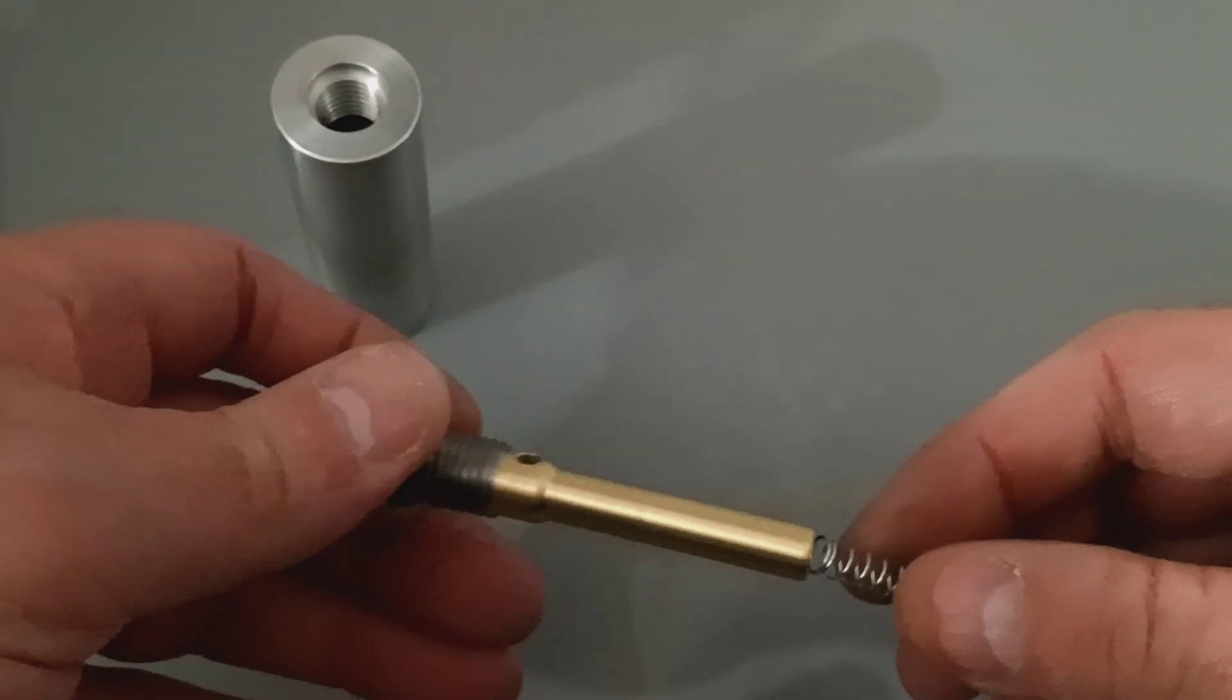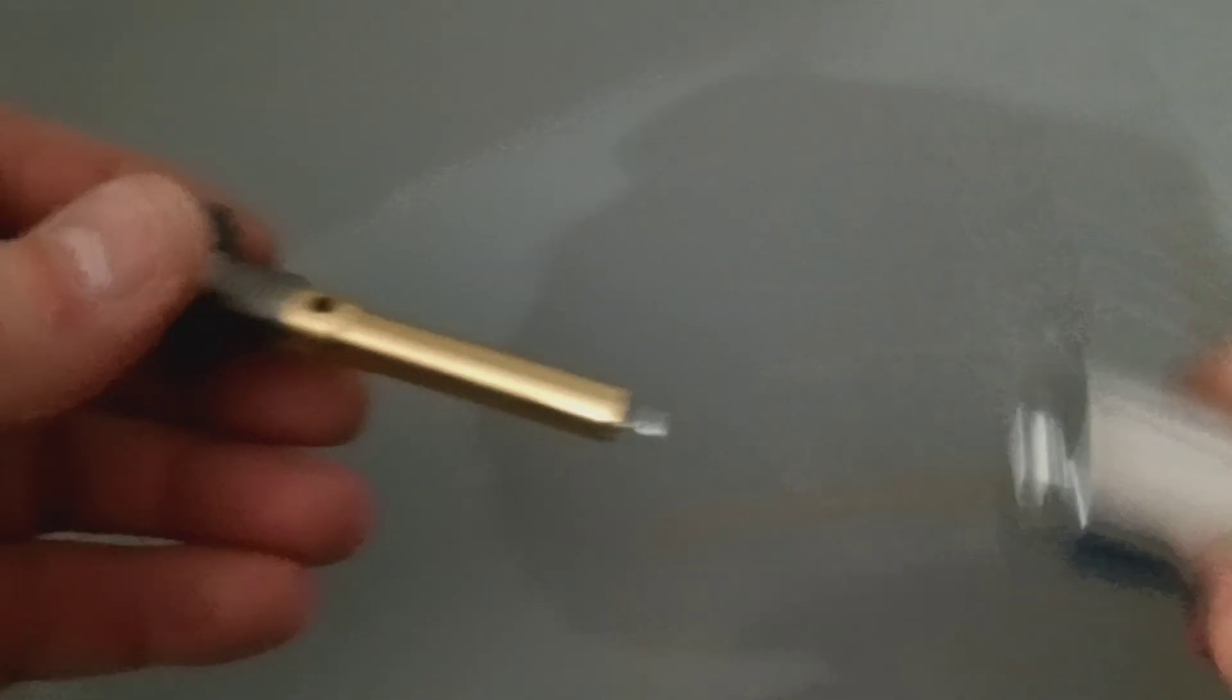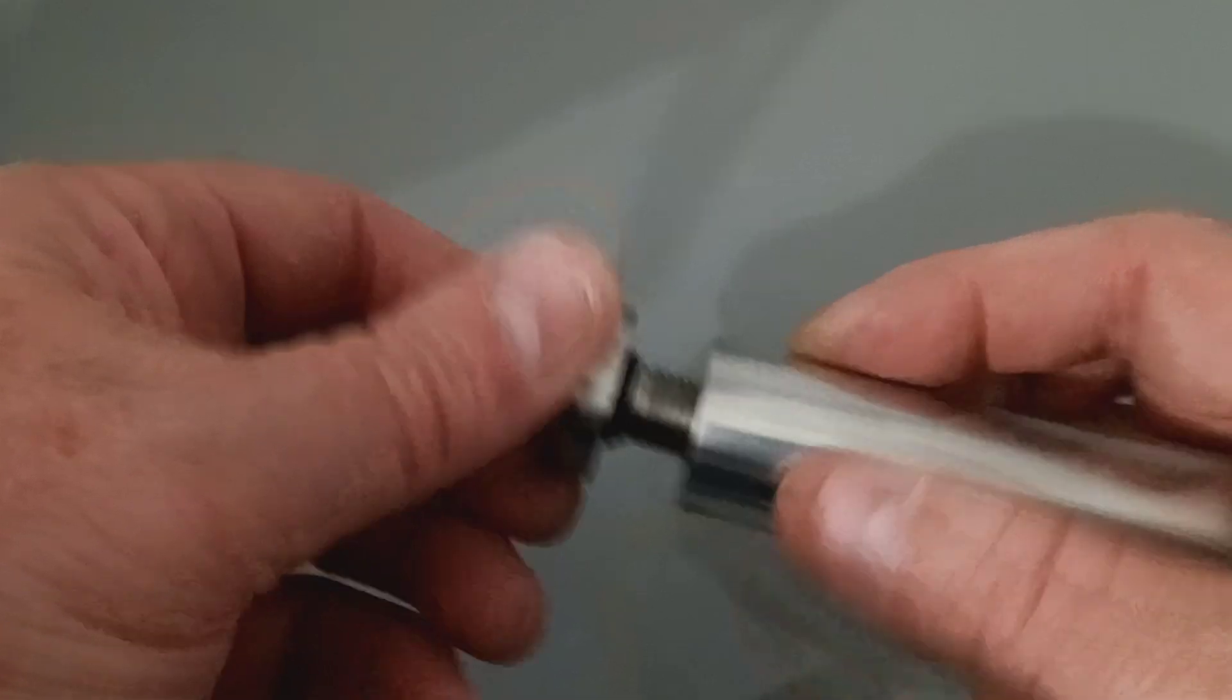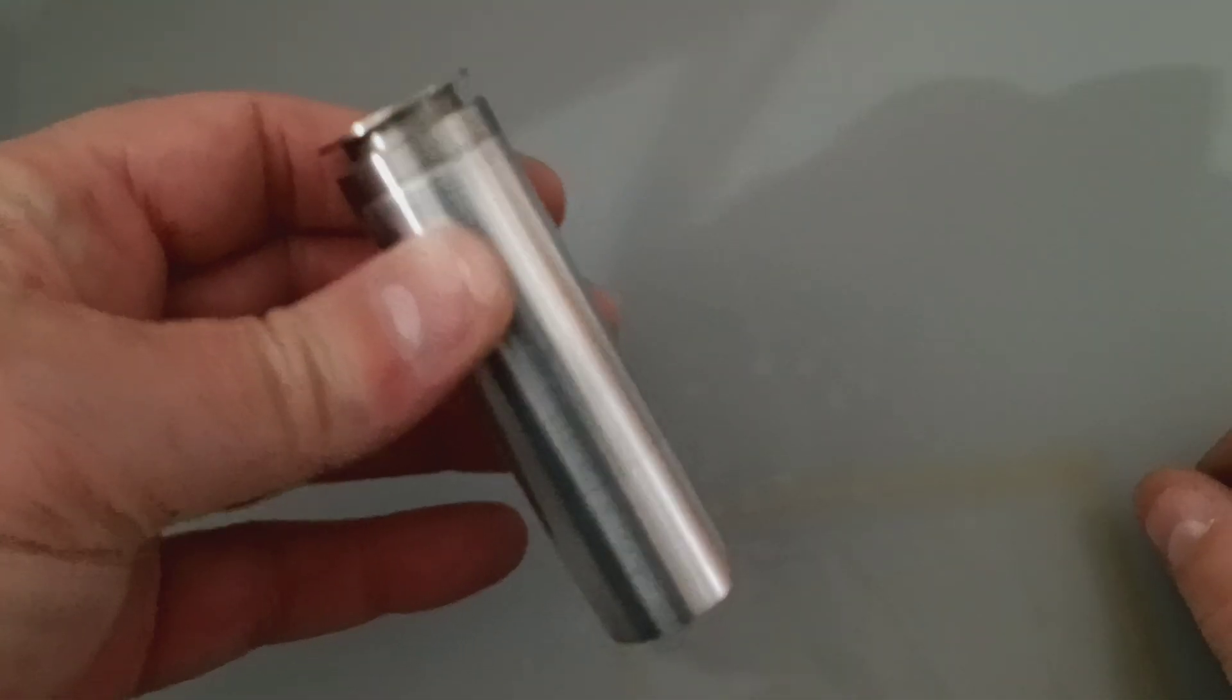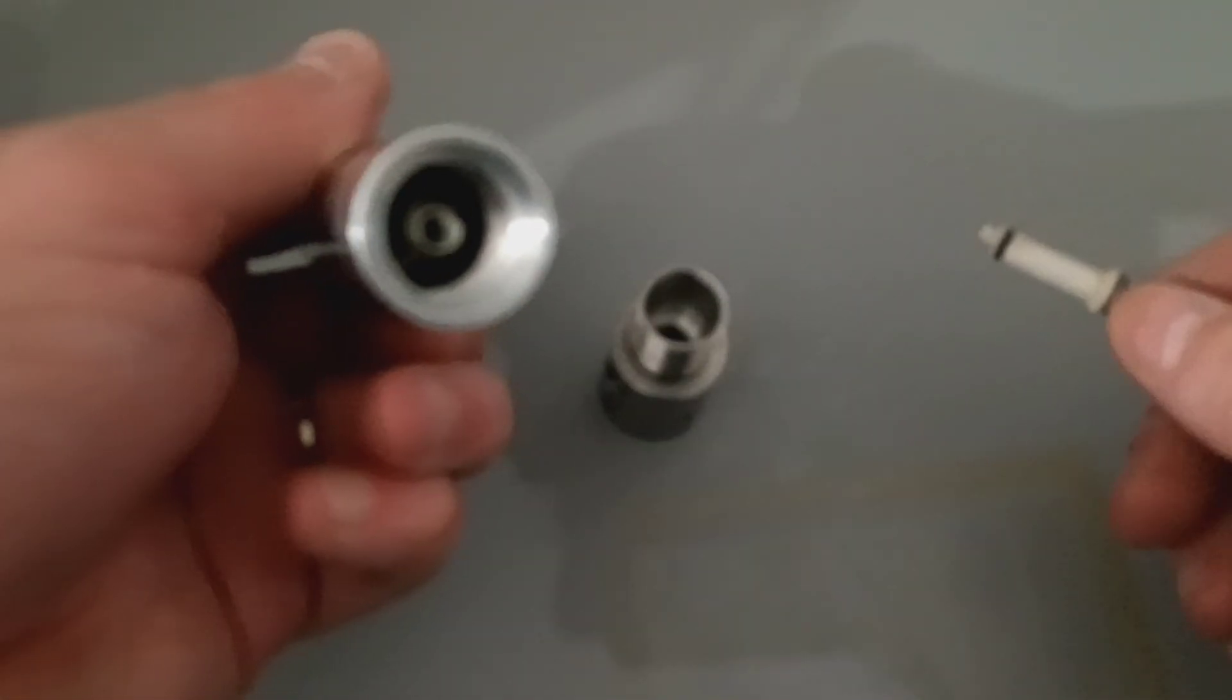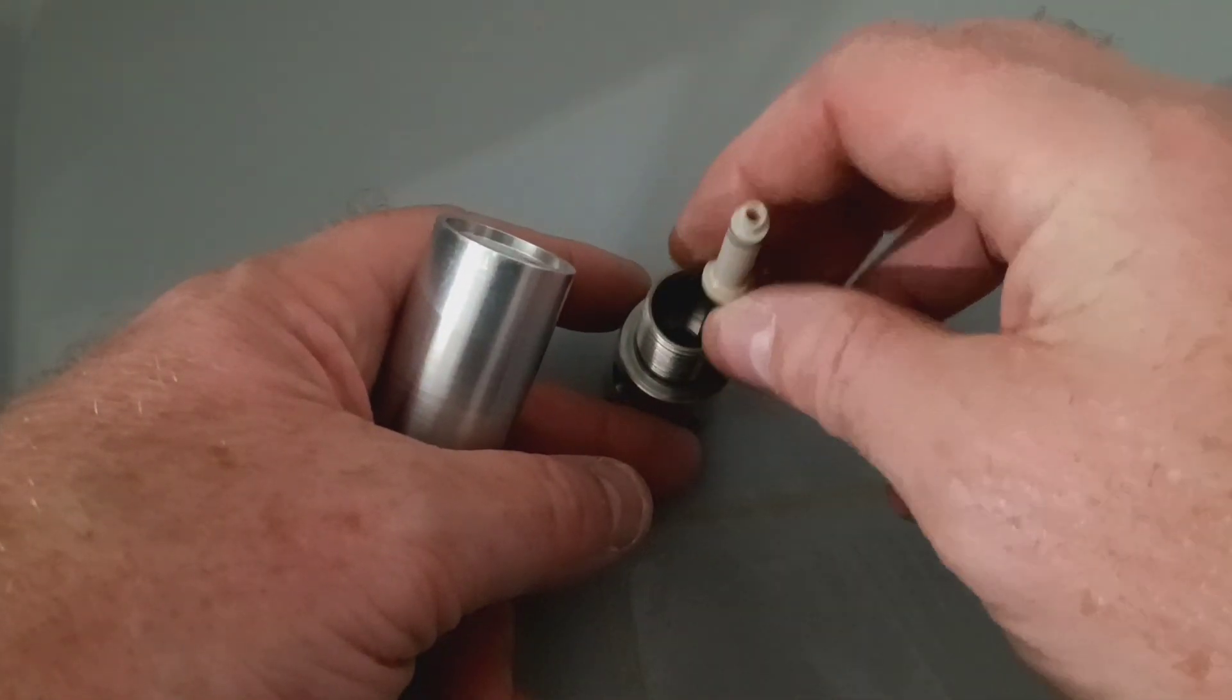We slip in the spring. This is the front of the valve. There's the inside. It's nice and concentric. Pop this on.